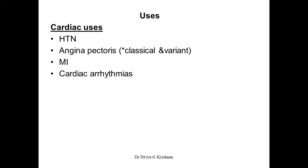The uses are mainly cardiac, because the non-cardiac uses seen with non-selective beta blockers were due to beta-2 blockade, which is why they are not present under the uses of cardioselective beta blockers. The uses are: hypertension, angina pectoris, myocardial infarction, and cardiac arrhythmias. Under angina pectoris, they can be used in both classical as well as variant angina, which is not seen with non-selective beta blockers, as those cannot be used in vasospastic angina.